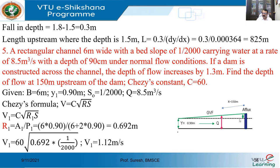In the earlier case, we knew the depth of flow - the pink line I'm showing right now. I knew the depth of flow, and from this depth of flow to the afflux, our aim was to find the length of the backwater curve. Now in this case, I know the position of the afflux, and at a distance of 150 meters from the afflux, what is the depth of flow? That is the question asked in this problem.